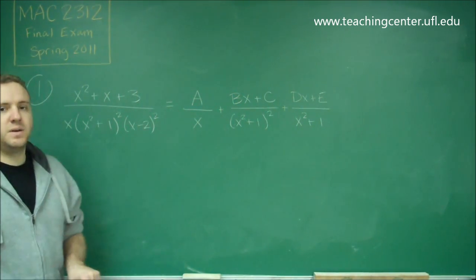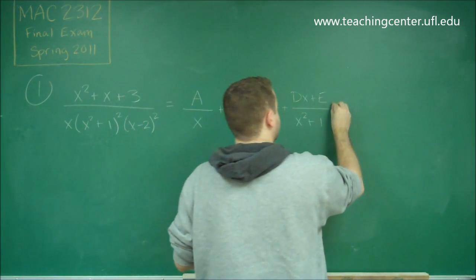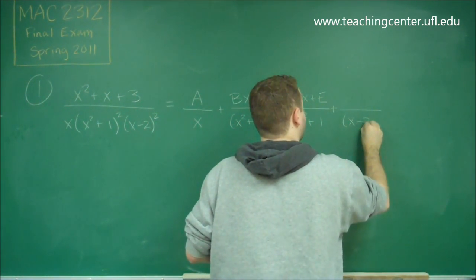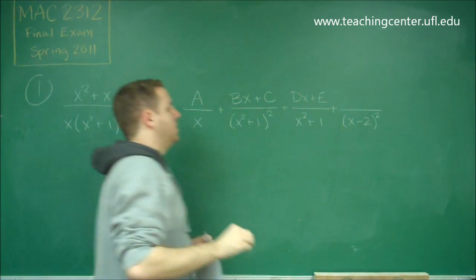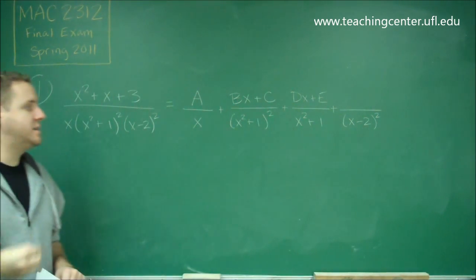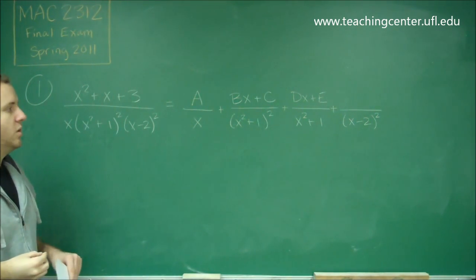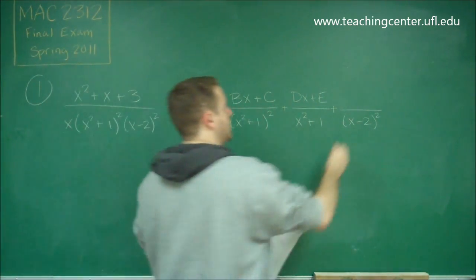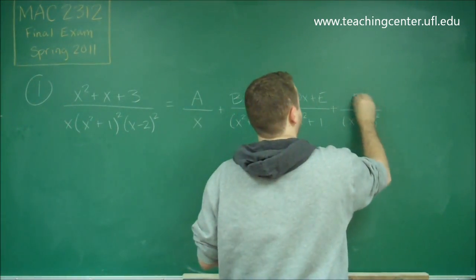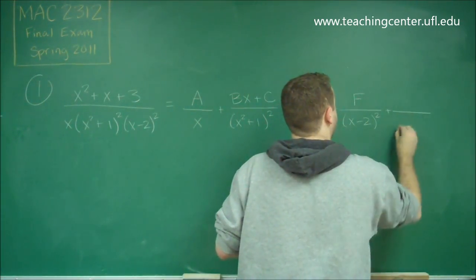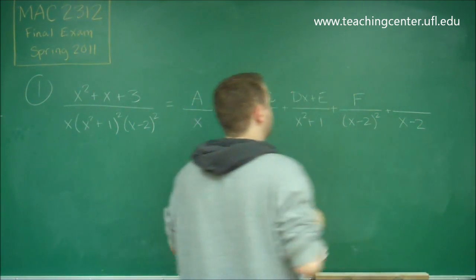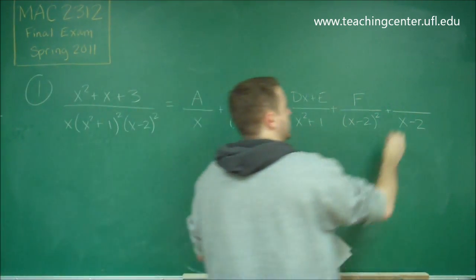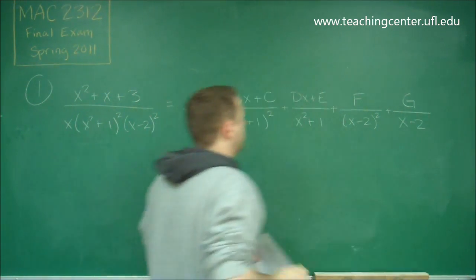Finally we have (x minus 2) quantity squared. Remember, even though that's squared, you look at the interior to figure out what type of numerator you need. That's only degree 1, so we just have a constant, which would be F. We also include x minus 2 at singular power, and that one again just has a constant, G.